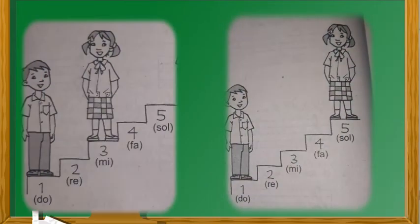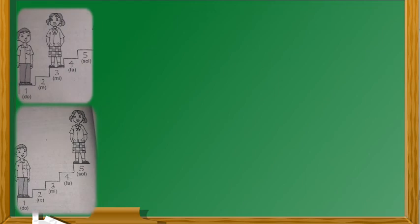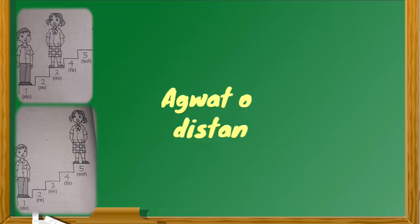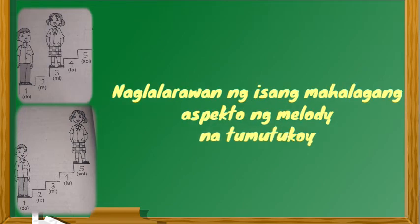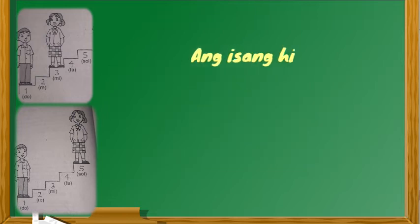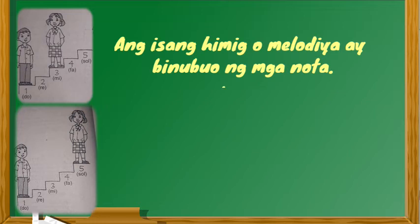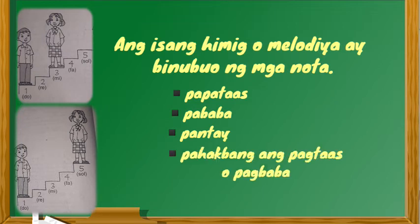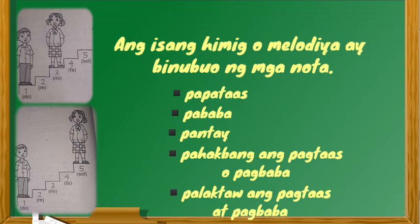Suriin ang dalawang larawan. Alin sa mga pares ng mga bata ang magkalapit? Alin naman ang higit na magkalayo? Magaling! Kung titignan natin ang ipinapakita ng mga bata ay ang agwat o distansya na naglalarawan ng isang mahalagang aspekto ng Melody na tumutukoy sa ugnayan o relasyon ng mga note sa isang awit. Na kung saan ang isang himig o Melody ay binubuo ng mga nota. Maaring ang mga nota ay papataas, pababa o pantay lang. Kung minsan, ito ay pahakbang ang pagtaas at pagbaba. May pagkakataon naman na palaktaw ang pagtaas at pagbaba. Dito natin makikita ang kinatawag na interval.